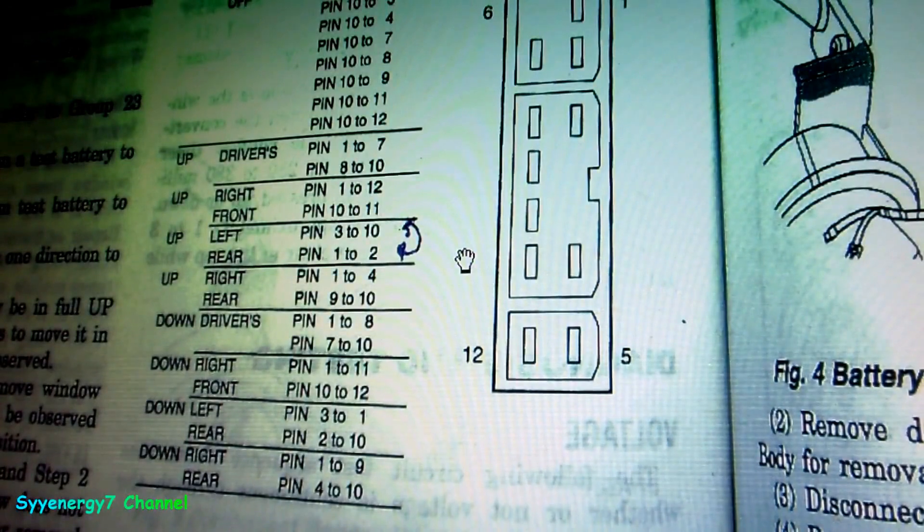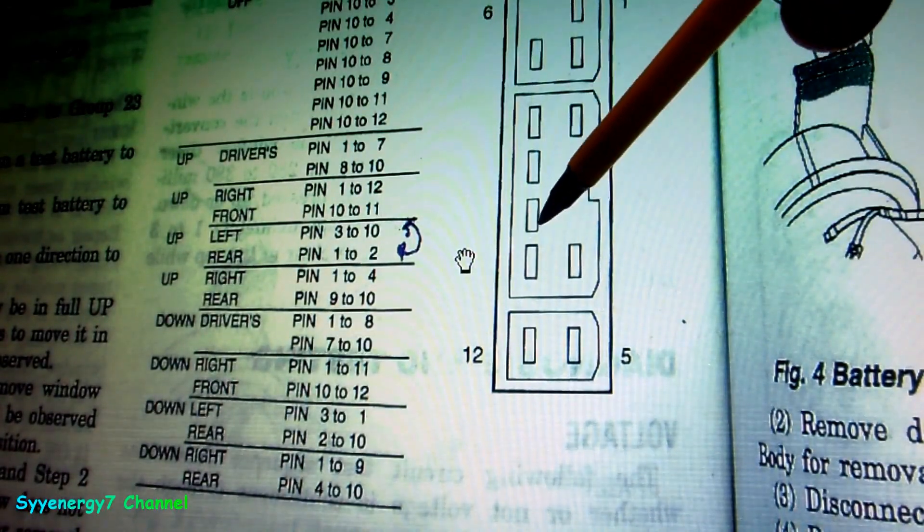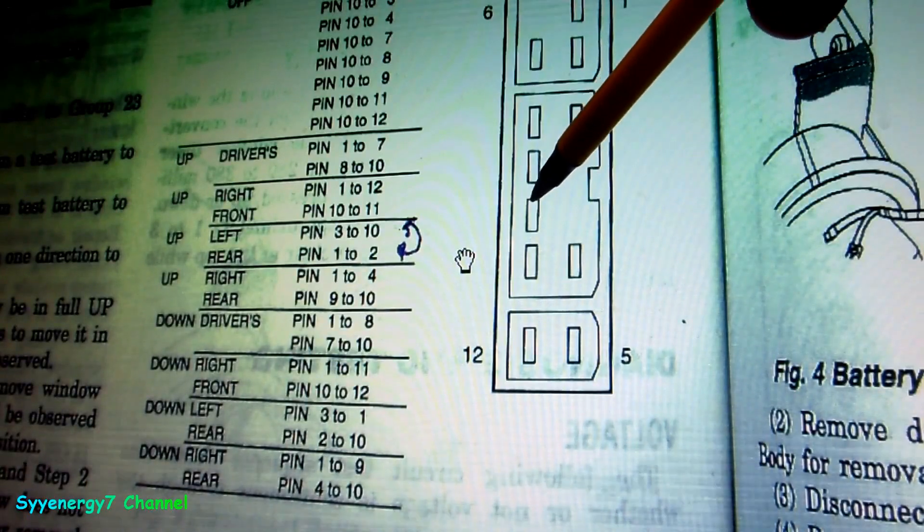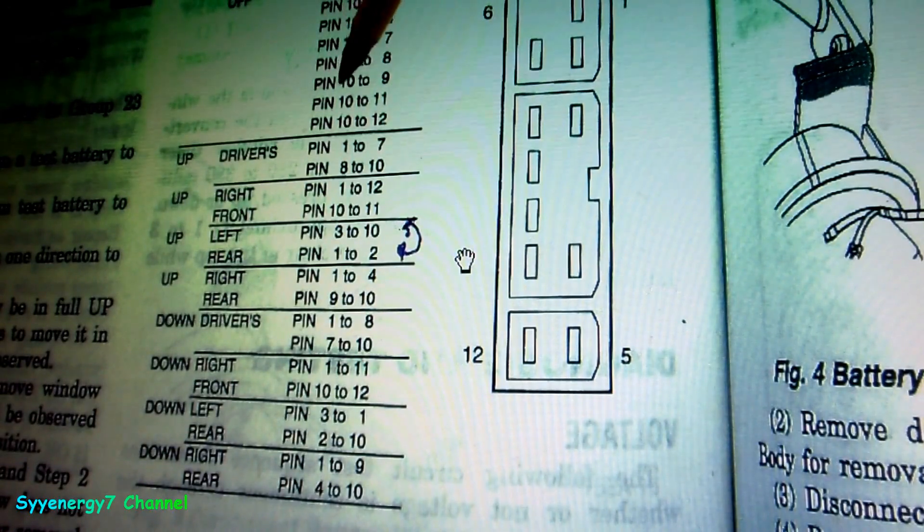You check for continuity between pins. Pin 10, that must be the power. That's 10 right here. So you check between 2 and 10, 10 and 2, 10 and 3, 10 and 4, 10 and 7, 10 and 8, 10 and 10, and 10 and 11, 10 and 12.